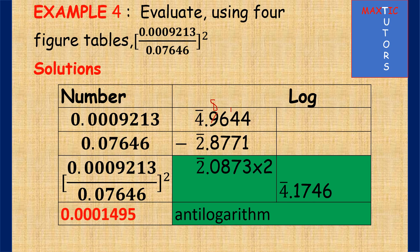Then you can now find the antilog of 17 under 4 difference 6, which is 1495. And because you have bar 4 here, which is 4 zeros, then it will be 1 zero before the number and 3 after. So your final answer will be 0.0001495.